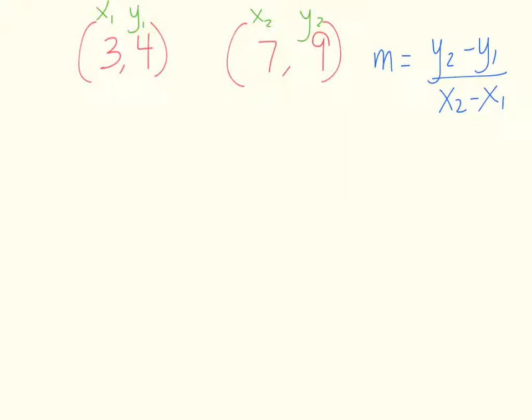So when I actually apply this formula, I'm going to take my y2, which is right there, which is 9, and put a minus sign because that's what the formula says, my y1, which is right here, which is 4. I am then going to take my x2 right there, which is 7, put the minus sign because again, the formula says minus sign minus my x1 right there, which is 3.